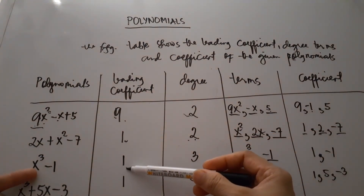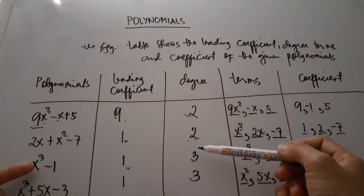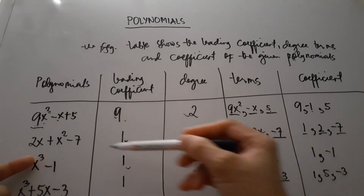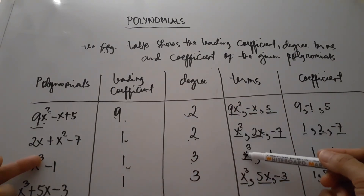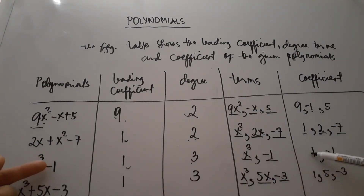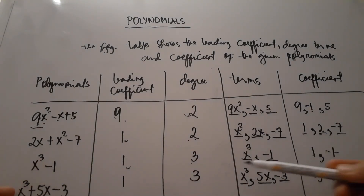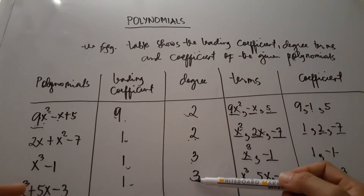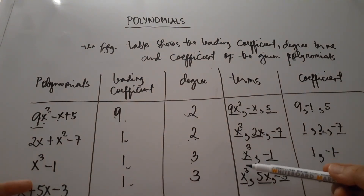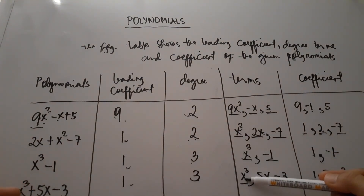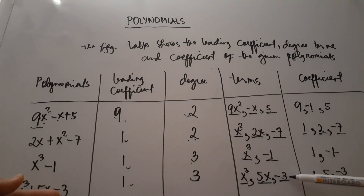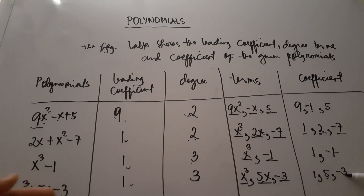For x cubed minus 1: the leading coefficient is 1, the degree is 3, it has 2 terms — x cubed and negative 1 — and the coefficients are 1 and negative 1. For x squared plus 5x minus 3: it has 3 terms and the coefficients are 1, 5, and negative 3.